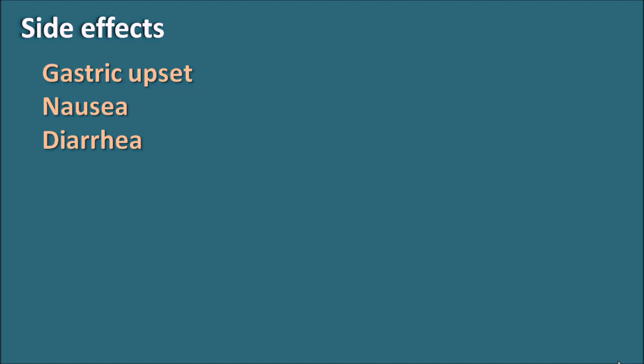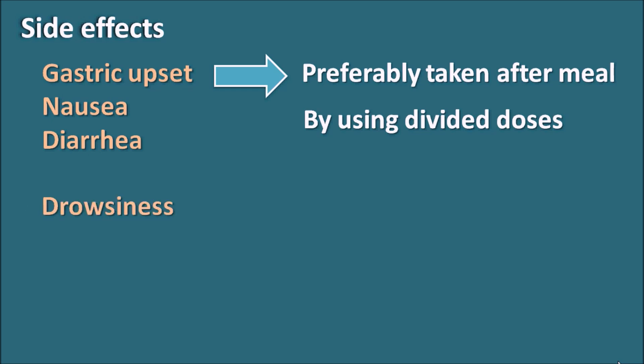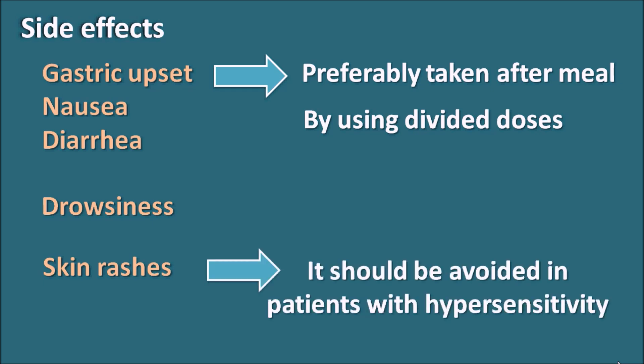The main side effects of allopurinol are gastric upset, nausea, and diarrhea. To minimize these side effects, allopurinol is preferably taken after a meal, and divided doses can also help. This is especially important when using doses above 300 mg — it should not be given as a single dose but divided into two or three daily doses. Other side effects include drowsiness and skin rashes. Some people may experience hypersensitive reactions, so allopurinol should be avoided in patients who develop such reactions.